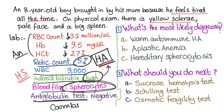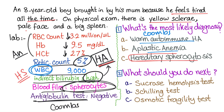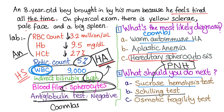The most likely diagnosis is hereditary spherocytosis. Warm autoimmune hemolytic anemia is excluded because it would show a positive Coombs test. Aplastic anemia is excluded because it causes pancytopenia, but here the white blood cell count is normal. The sucrose hemolysis test is used for paroxysmal nocturnal hemoglobinuria, and the Schilling test is an archaic test for B12 deficiency. The correct next diagnostic step is the osmotic fragility test, which is the diagnostic test for hereditary spherocytosis.